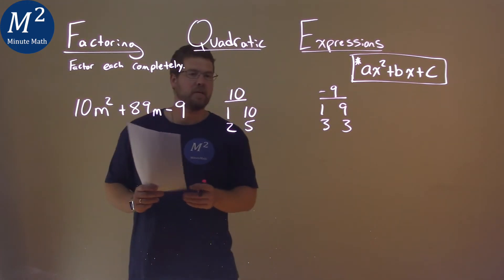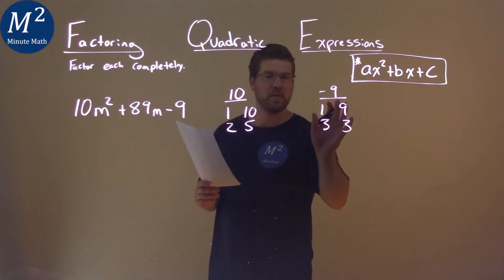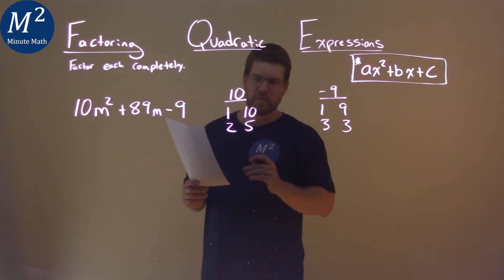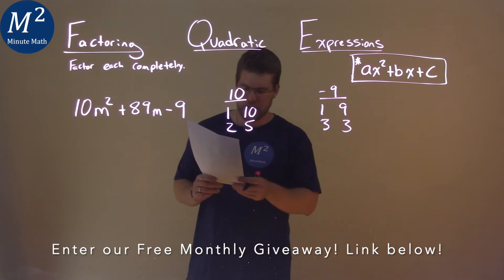So now I have to ask myself, what are the numbers from a pair of a times one of the pairs from c, plus the other one from a and then the other times the other one from c, that gives us 89. And remember, one of the c values has to be negative.